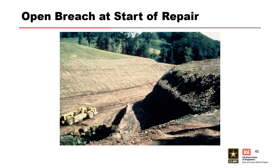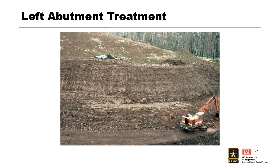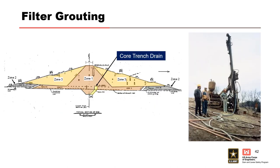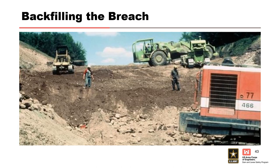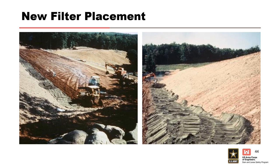Here's a photo of the breach area prior to the repair. Weathered rock was removed from the steep left abutment and the slope was flattened. Grouting was performed from the surface of the dam to fill the coarse filter on the downstream side of the cutoff trench. Next, the breach was backfilled and properly compacted. Finally, the downstream section of the dam was cut back to a one and a half horizontal to one vertical slope, and a new embankment filter drain was installed the full length of the dam.